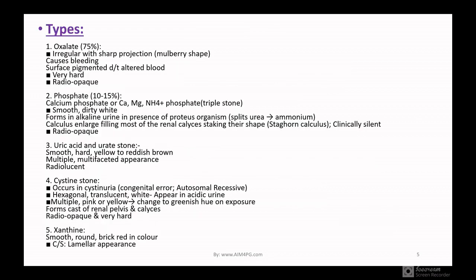Now what are the types of stones? 75% are oxalate stones — these are irregular with sharp projections, mulberry-shaped, cause bleeding, are pigmented due to altered blood, very hard, and radio-opaque. Phosphate stones account for about 10–15%. These can be calcium phosphate or calcium magnesium ammonium phosphate (triple stone). They are smooth, dry, and white. These stones form in alkaline urine in the presence of Proteus organisms which split urea into ammonia. Calculi can enlarge filling most of the renal calyces — staghorn calculi. Clinically these are often silent and are radio-opaque.